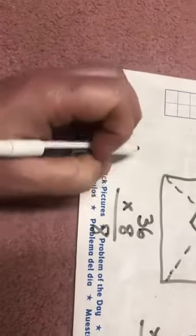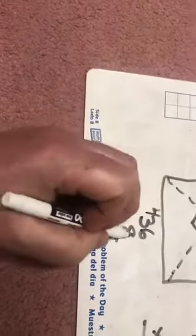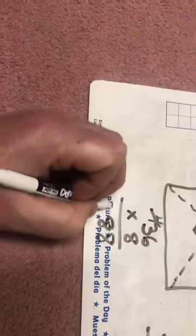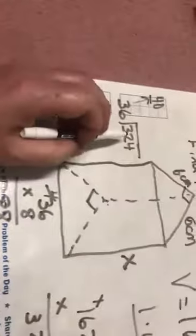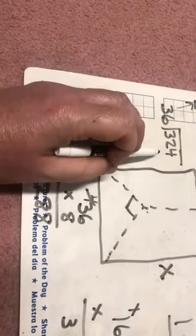Eight times six is 48. Put the eight down, carry the four. Eight times three is 24 plus four is 28. Well, that's a little ways away from 324.